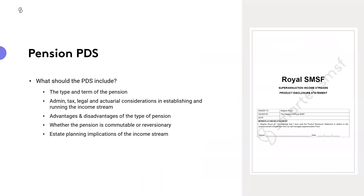In my view, the default position we take with our generation of pension documents is that the client's understanding as a member is insufficient. Therefore, by default we are going to issue a product disclosure statement when someone commences a superannuation income stream. The legislation around issuing a PDS has been around for a long time, but it still creates a range of activity inside the industry. SMSF software does not provide a PDS because there's really no connection back to a specific deed and its governing rules, and therefore the features and benefits of the type of pensions that could be paid. What should that PDS include? Things like the type and term of pension, admin, tax and legal actuarial considerations, advantages and disadvantages of the pension, commutability, reversionary nature, and estate planning implications.